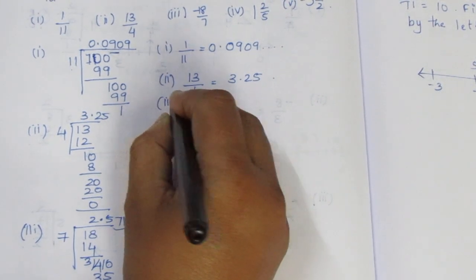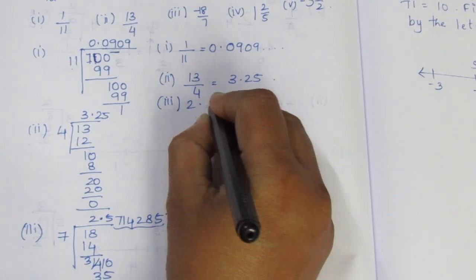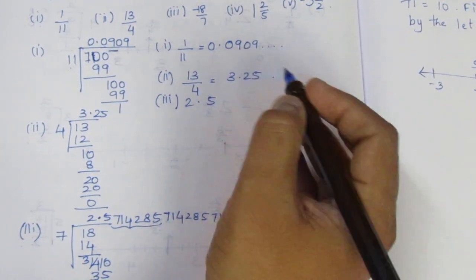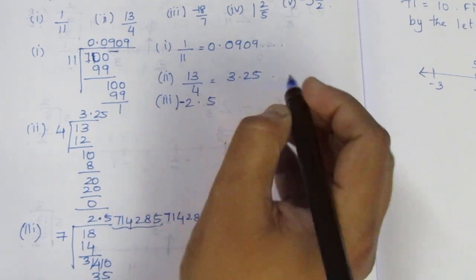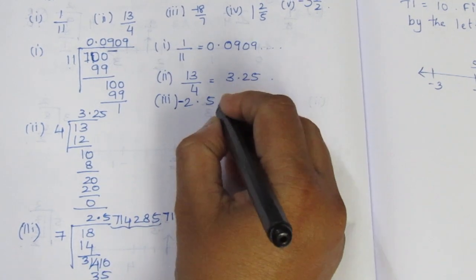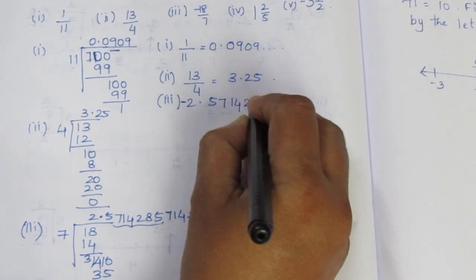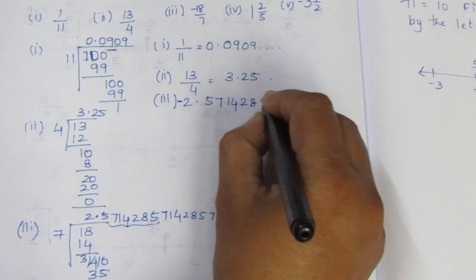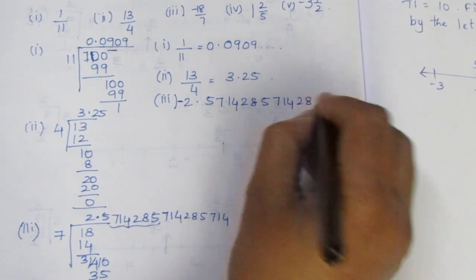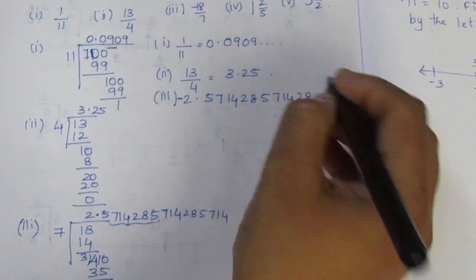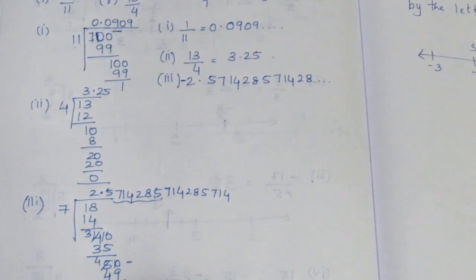Now the third sum answer is 2.571428... and since there is a negative sign, the answer is minus 2.571428 repeating — the digits 5, 7, 1, 4, 2, 8 repeat.